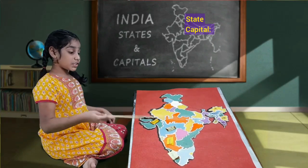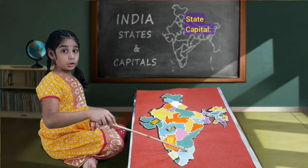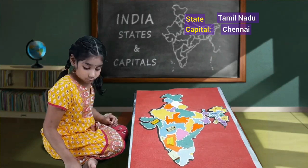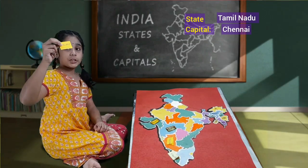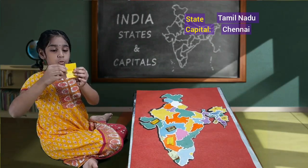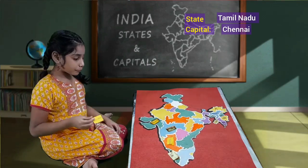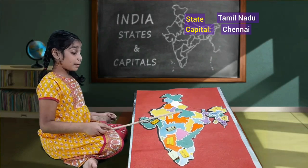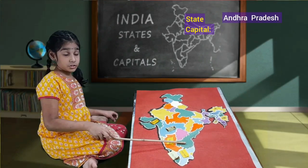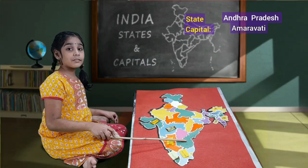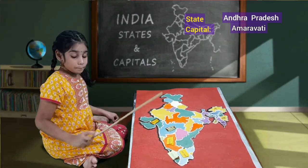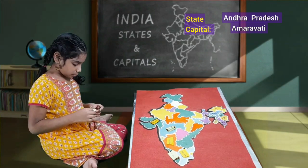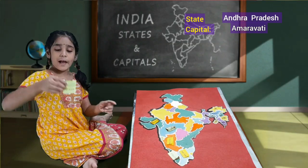And beside Kerala, we'll have Tamil Nadu. Tamil Nadu's capital is Chennai. This is Tamil Nadu. If we open the chat of Tamil Nadu, we'll have Chennai. Above Tamil Nadu, we'll have Andhra Pradesh. Andhra Pradesh's capital is Amaravati. This is Andhra Pradesh. If we open the chat, we'll have Amaravati.